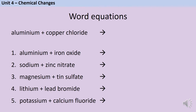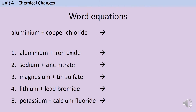You need to be able to write word equations to describe chemical reactions like displacement. Remember, in a chemical reaction no atoms are made or destroyed — we're just rearranging the atoms we already have into different compounds. For the reaction we just looked at: when aluminium reacts with copper chloride, we make copper and aluminium chloride. The aluminium has taken the place of the copper.